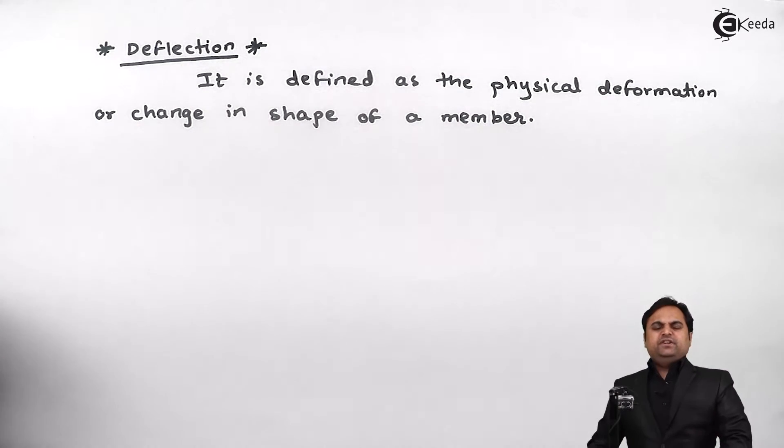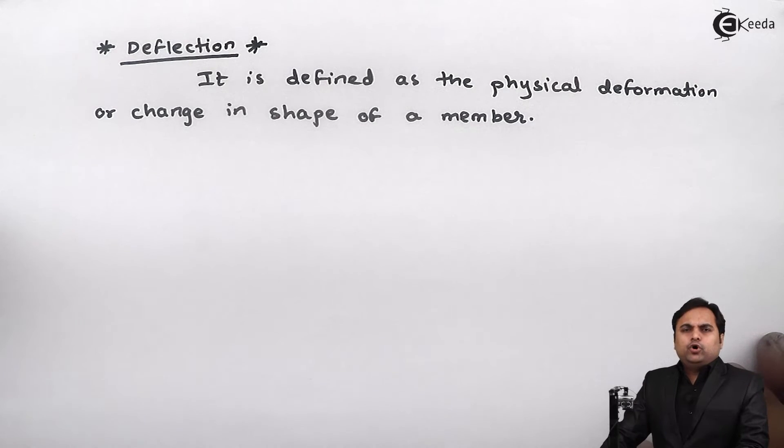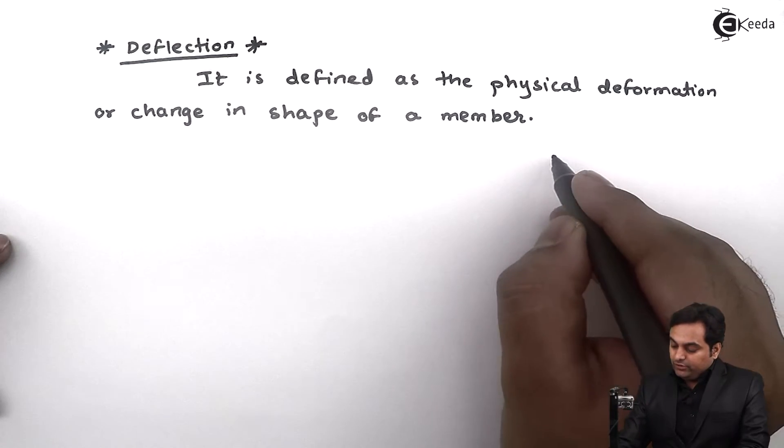So this is the definition that deflection is defined as the physical deformation or we can say the change in shape of a member. To understand this, here I draw a diagram.